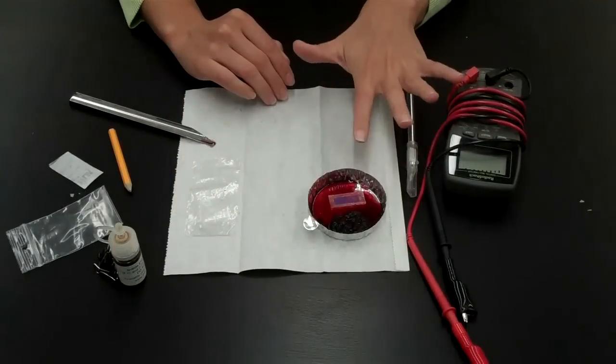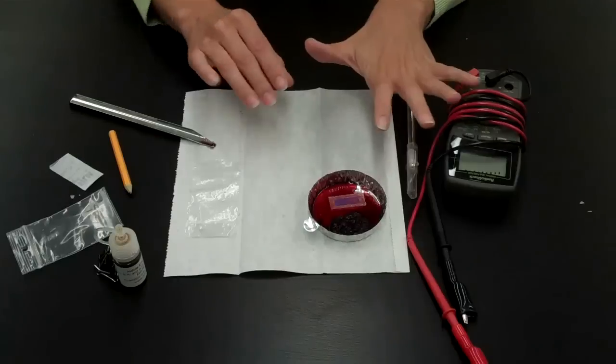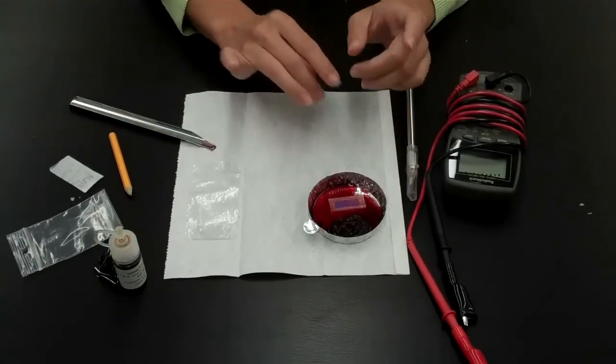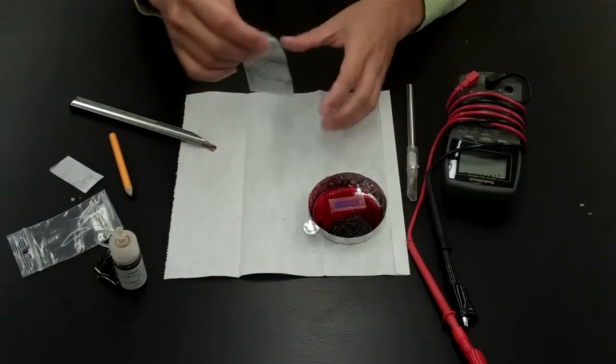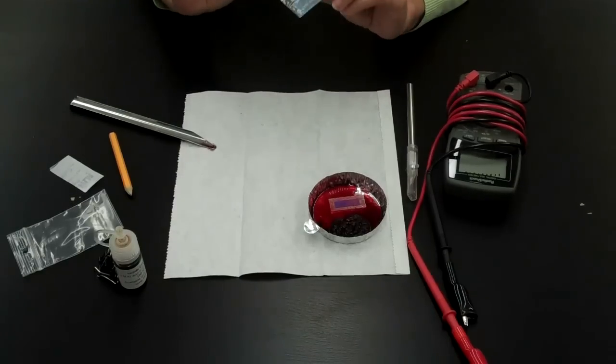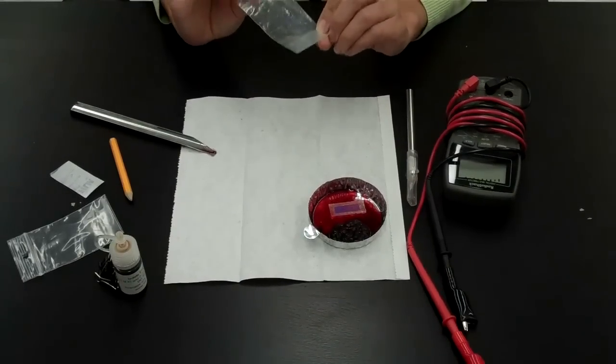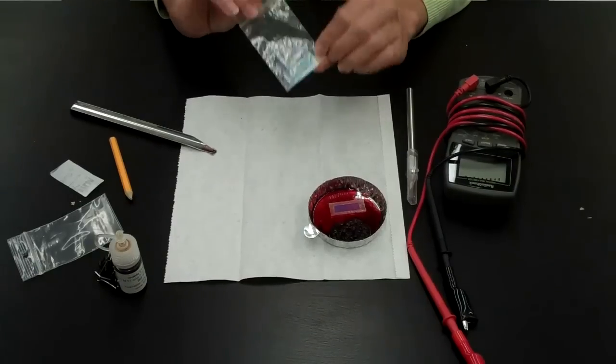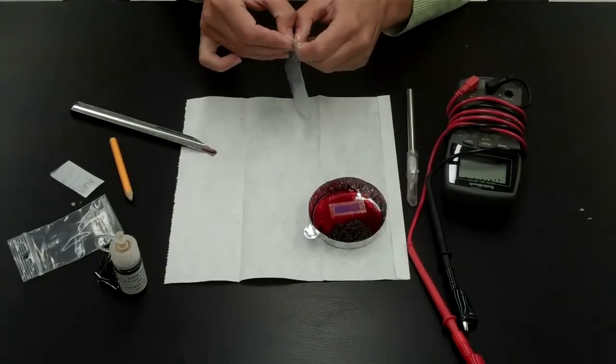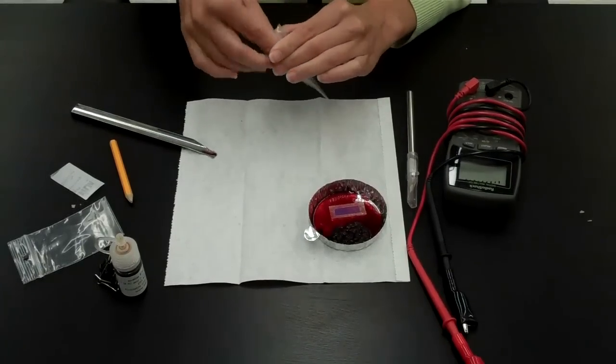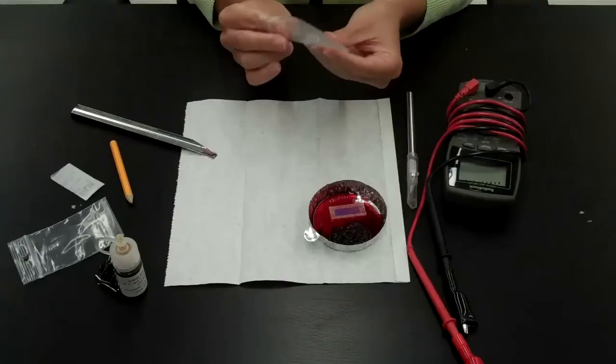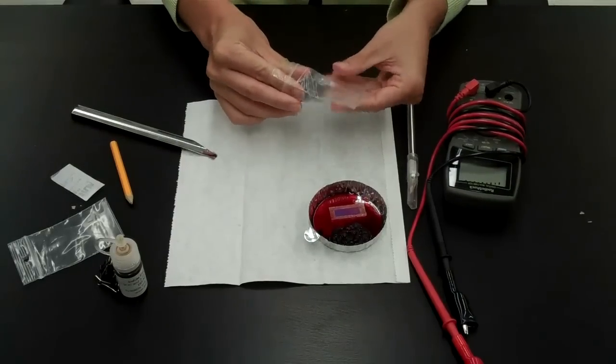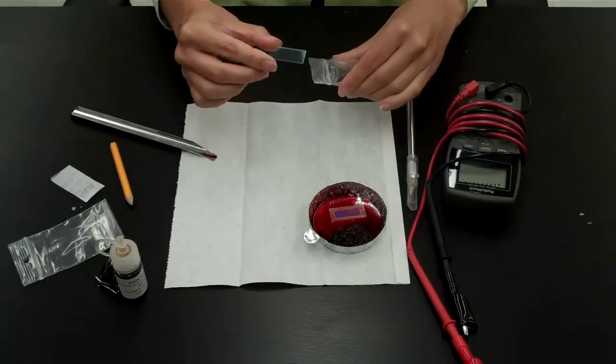While your titanium dioxide slide is dyeing, you then can remove your transparent slide, which is coated with indium tin oxide, but only on one side, so you'll need to identify which side has the conductive coating. Again, remove the slide using only the edges.